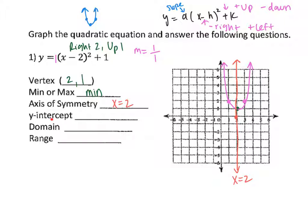The y-intercept is where the curve hits the y-axis. Unfortunately, I don't know for sure when this line hits the y-axis, because I estimated what this curve would look like when connecting the dots. Right now it doesn't look like this curve is hitting the y-axis from the graph, so oftentimes you can't use the graph to figure out your y-intercept because it all depends on your drawing.